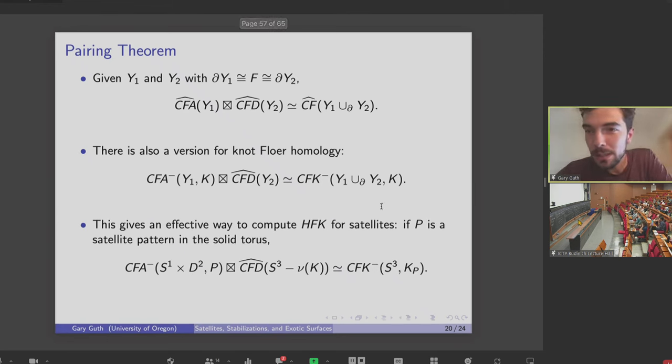And this is really well suited to studying satellite operations, because that's exactly how we define these satellite knots. I had this pattern knot that was living inside the solid torus, and I glued it to the complement of my knot in S3. And bordered Floer then tells you exactly how to compute HFK minus of this satellite knot.